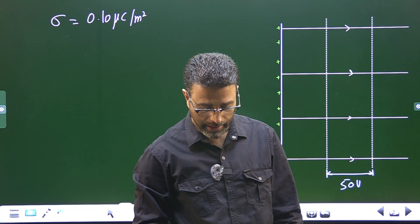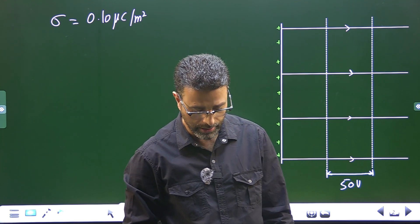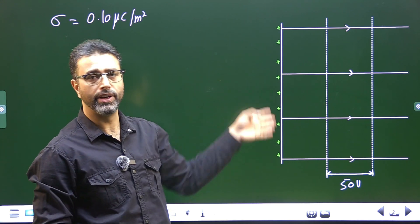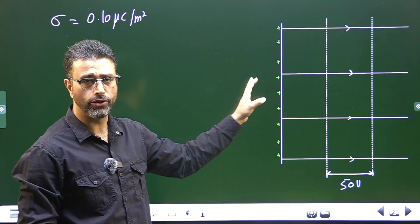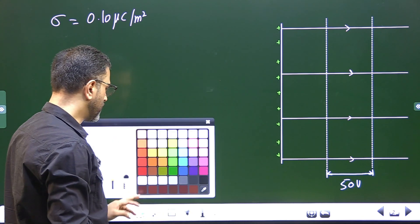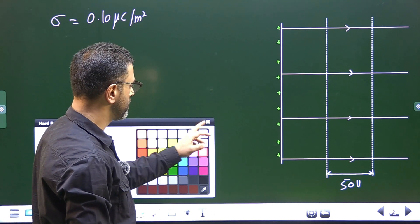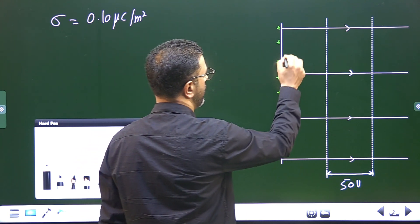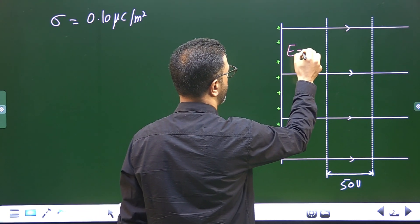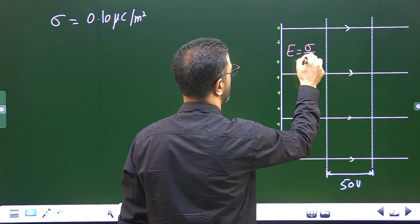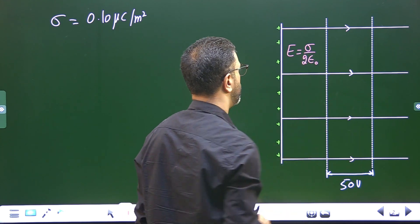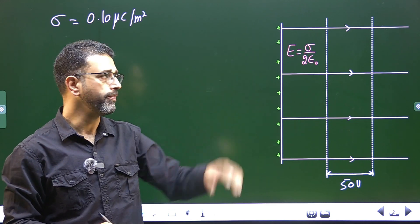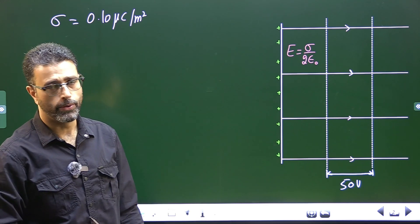We need to find how far apart equipotential surfaces are whose potentials differ by 50 volts. We have an infinite uniformly charged sheet, so it will develop an electric field in the space around it. The electric field — as you must be aware from the previous chapter on Gauss's law — is given by sigma divided by 2 epsilon-naught.